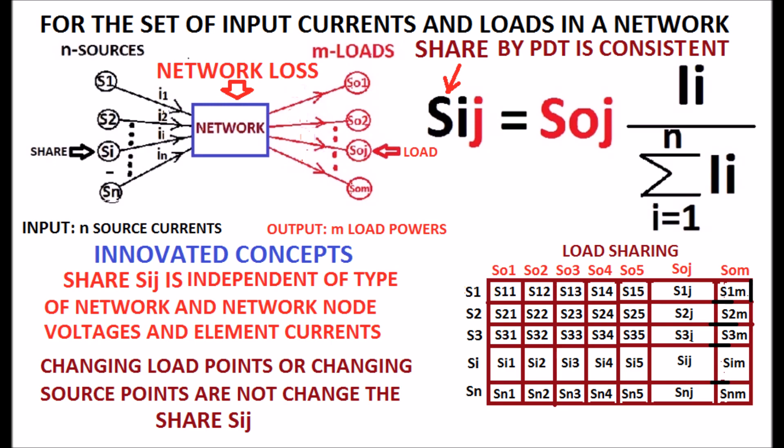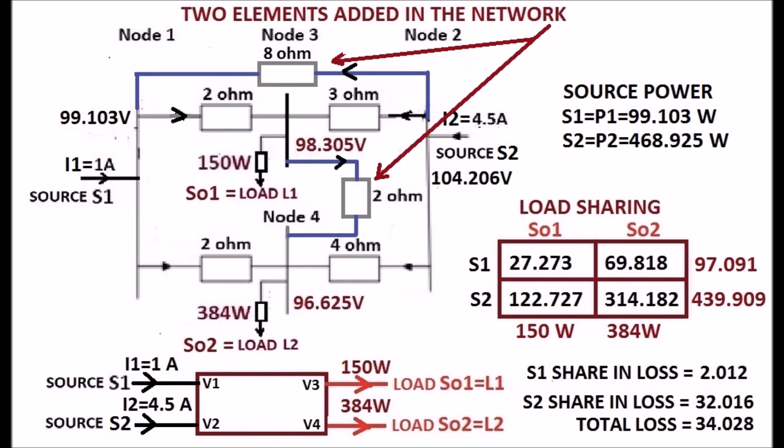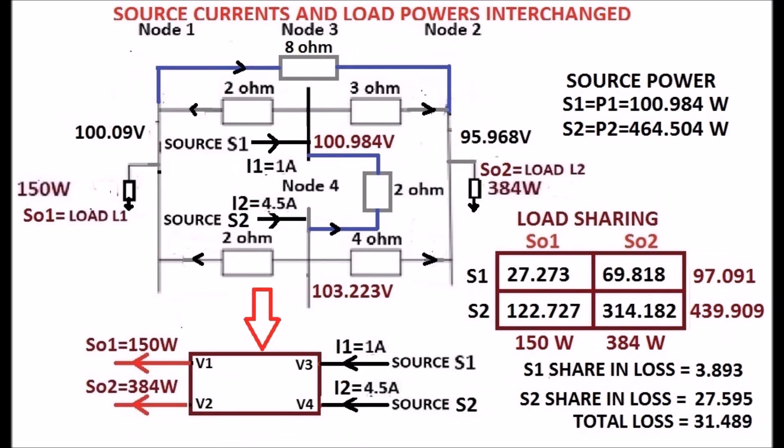Examples for validation. First case: the network example from the published paper, as considered. In the network, two elements are added. Second case: in the network, the sources and load powers are interchanged.